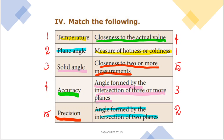Now for match the following. Temperature is a measure of hotness or coldness. Solid angle is the angle formed by the intersection of two planes. Accuracy means closeness to the actual value. Precision means closeness of two or more measurements to each other. You can match these by their exact meanings.